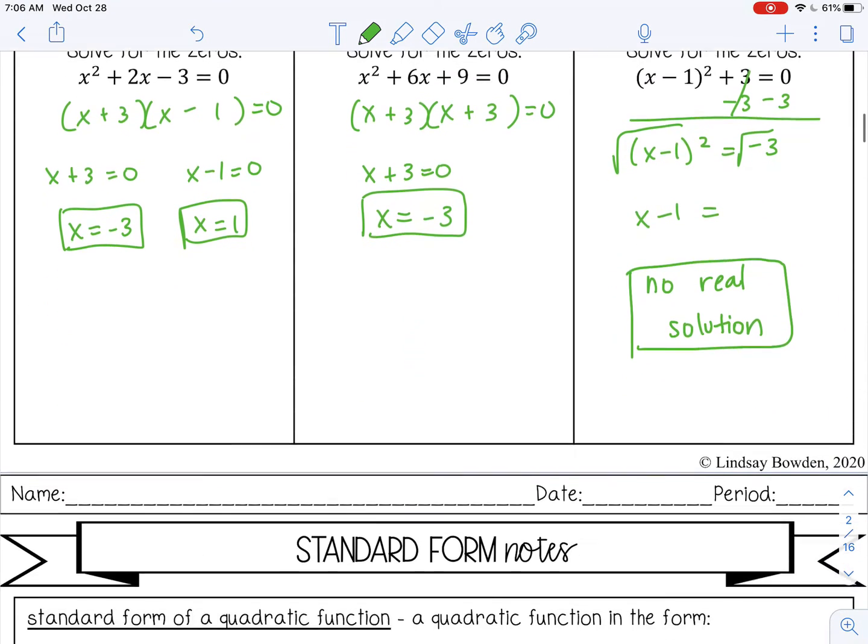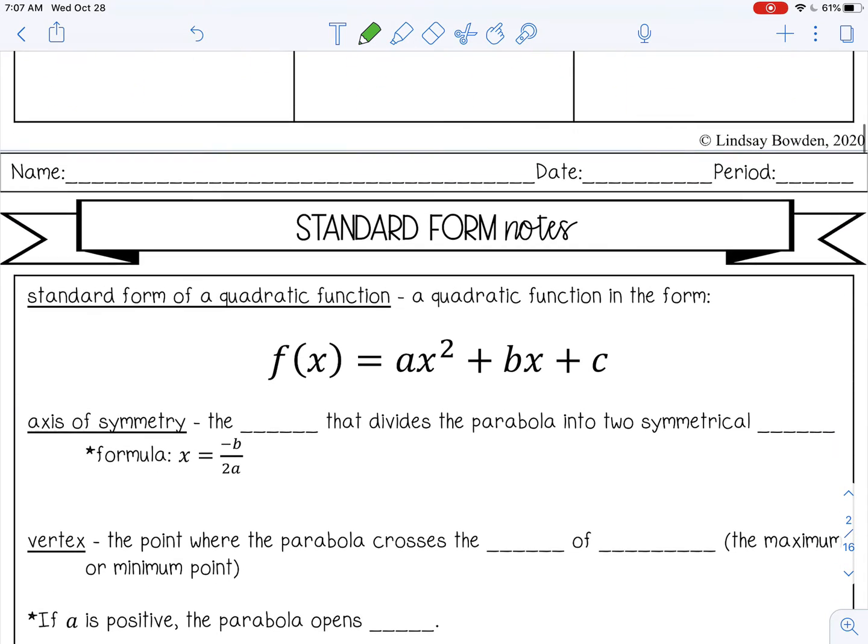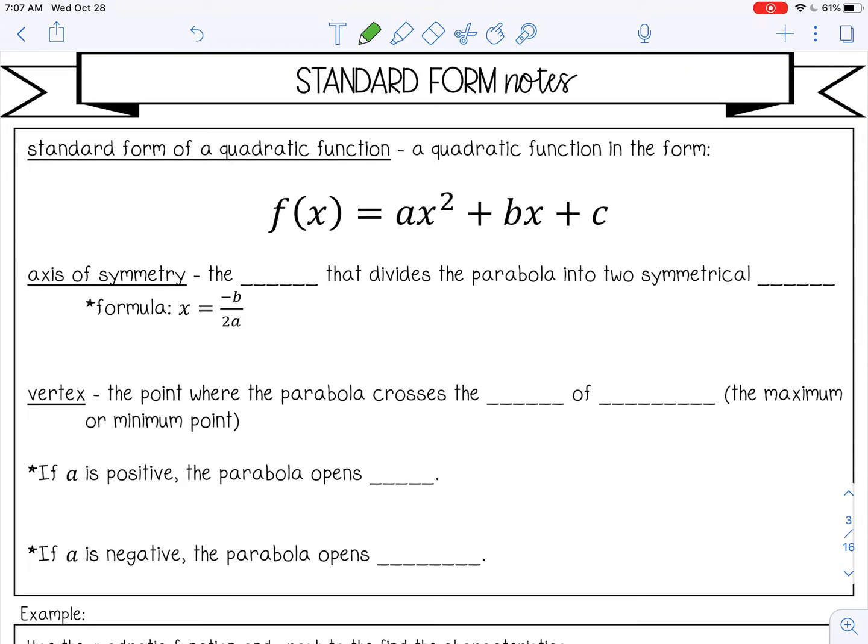Let's move on into standard form. Standard form is a quadratic function in the form f(x) equals ax squared plus bx plus c. And we've seen many in that form already. There's a few vocabulary words we need to go over when we're talking about standard form and graphing standard form.